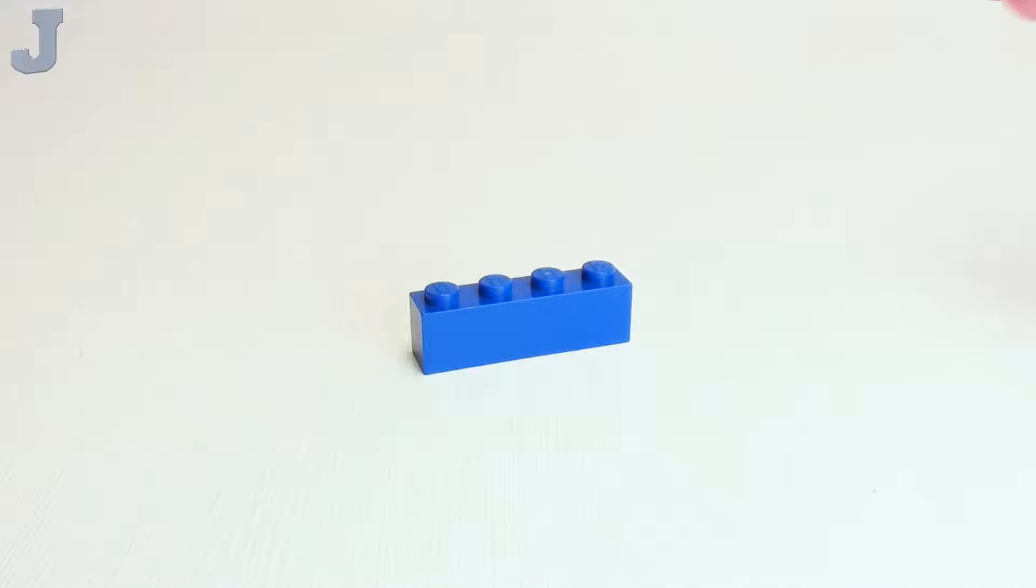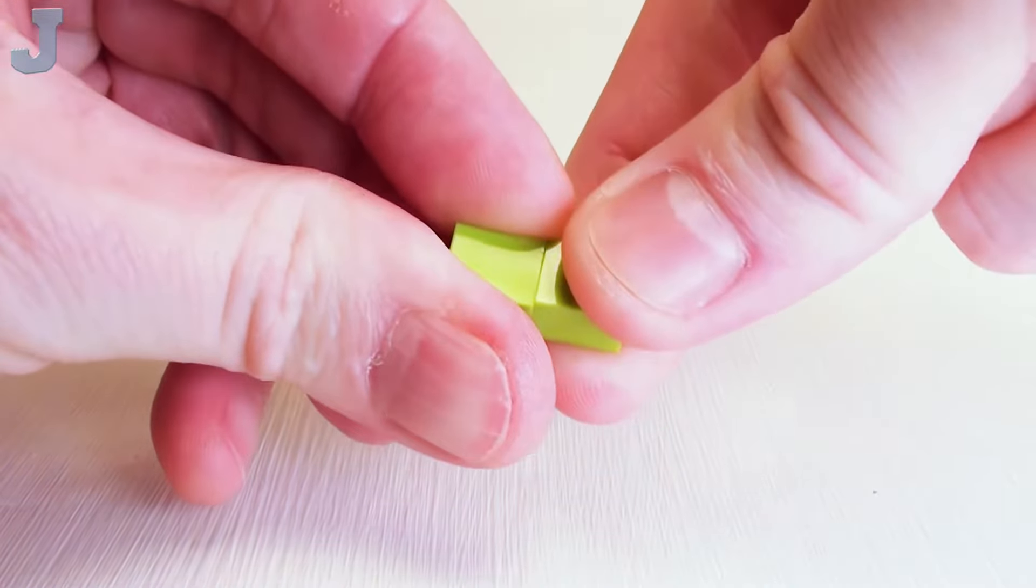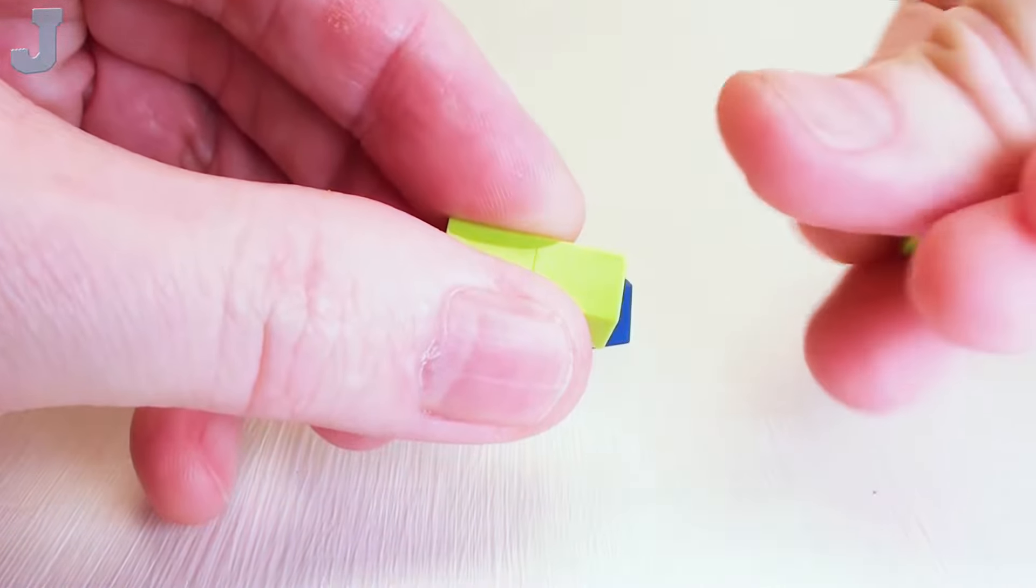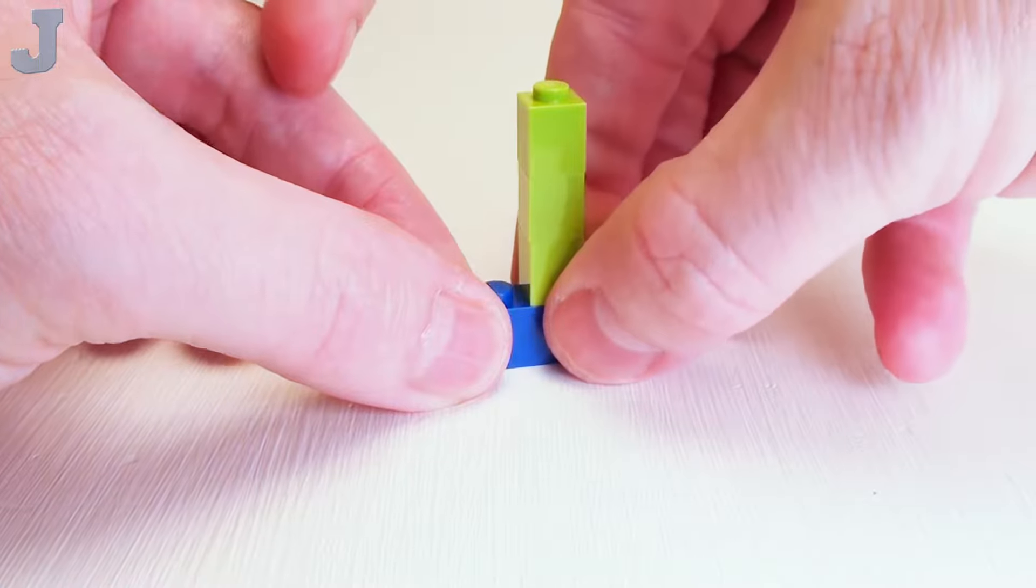Let's begin with a 1 by 4 brick. I want to take three 1 by 1 bricks. We're going to place these on top of one another and I want to place this on the third stud.